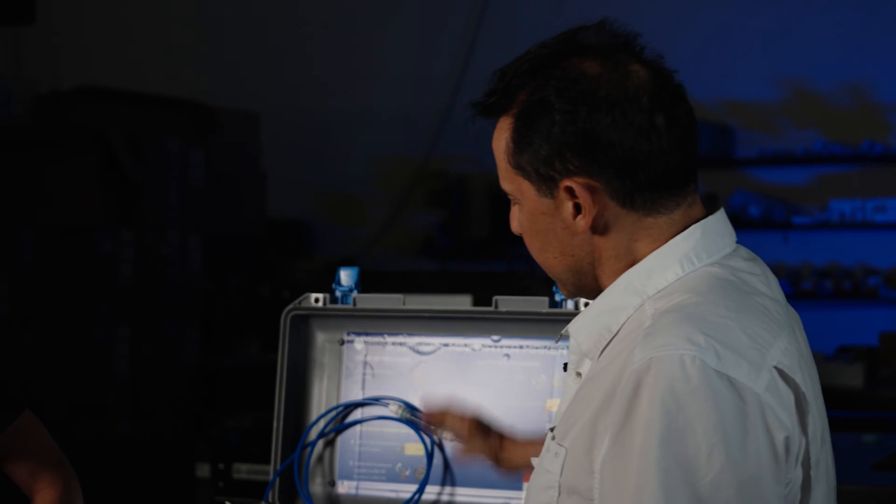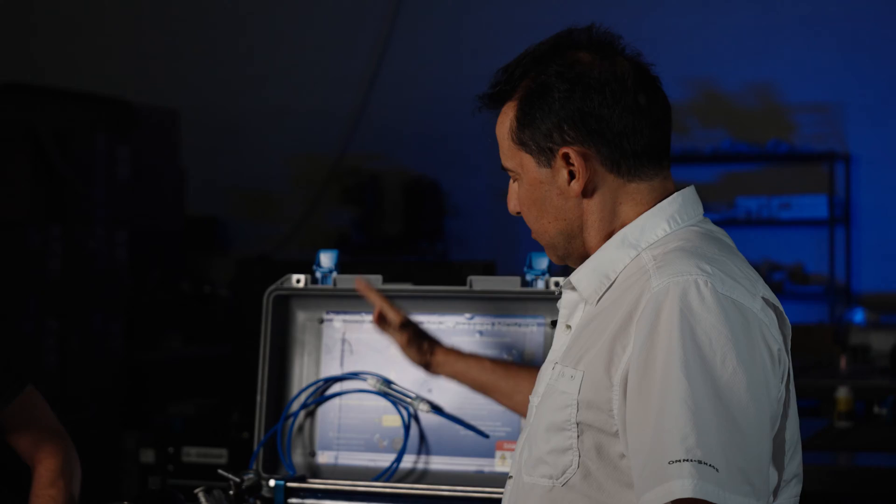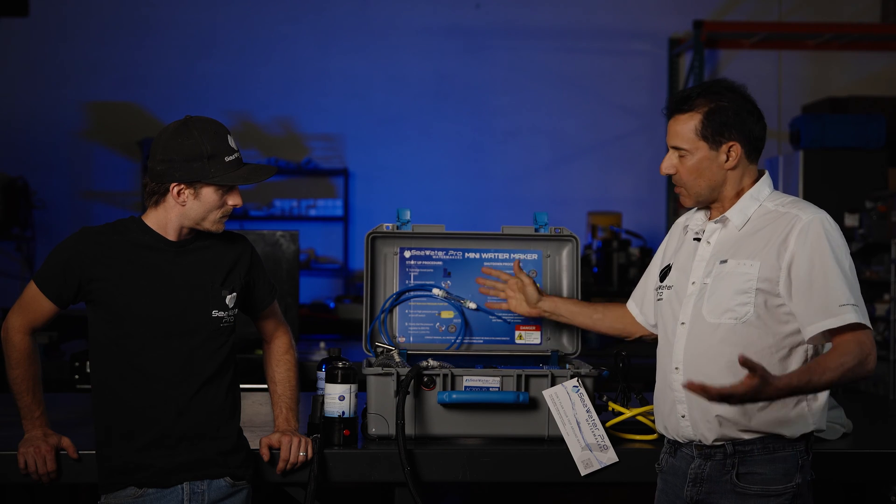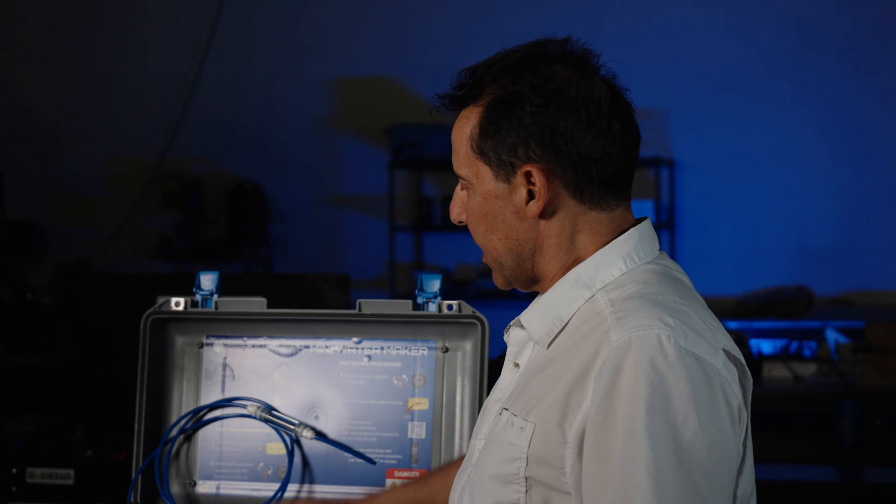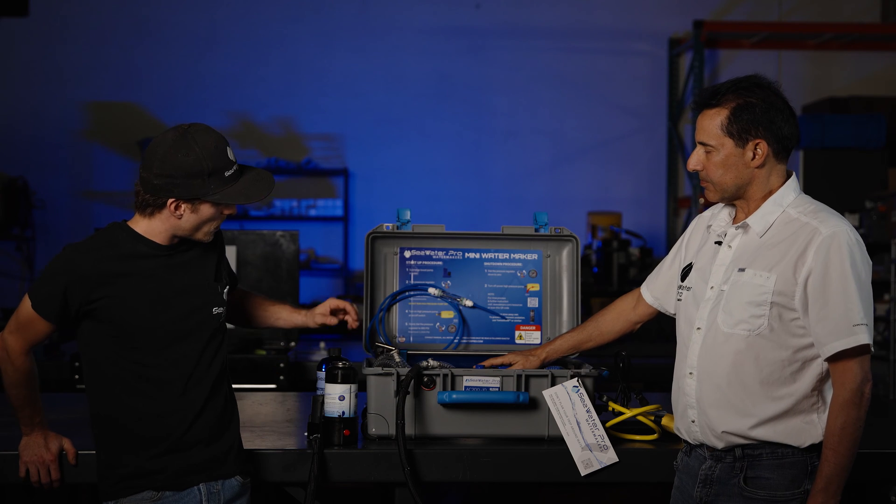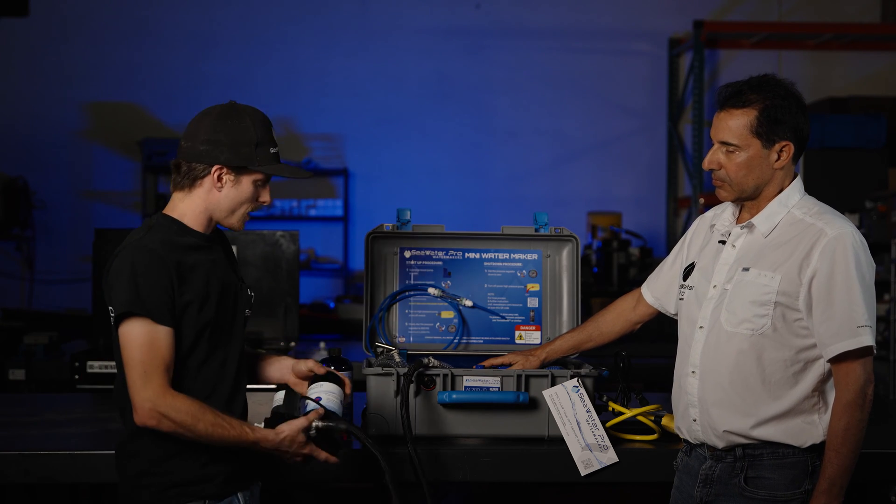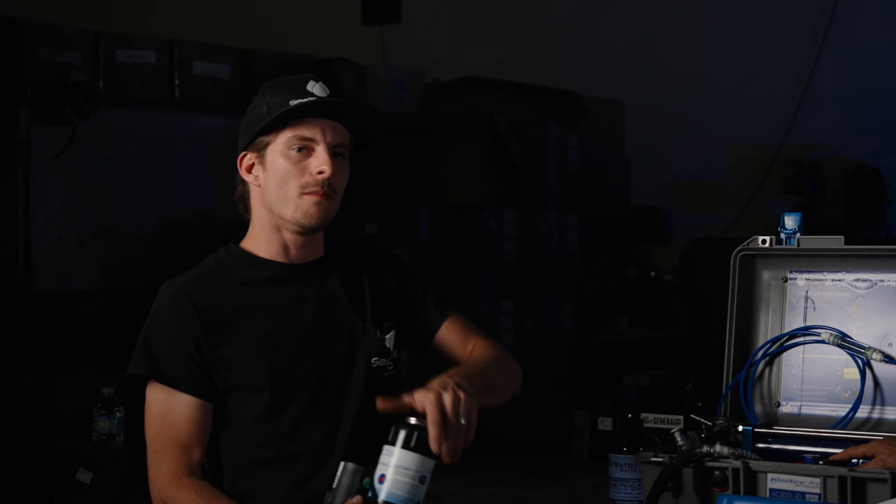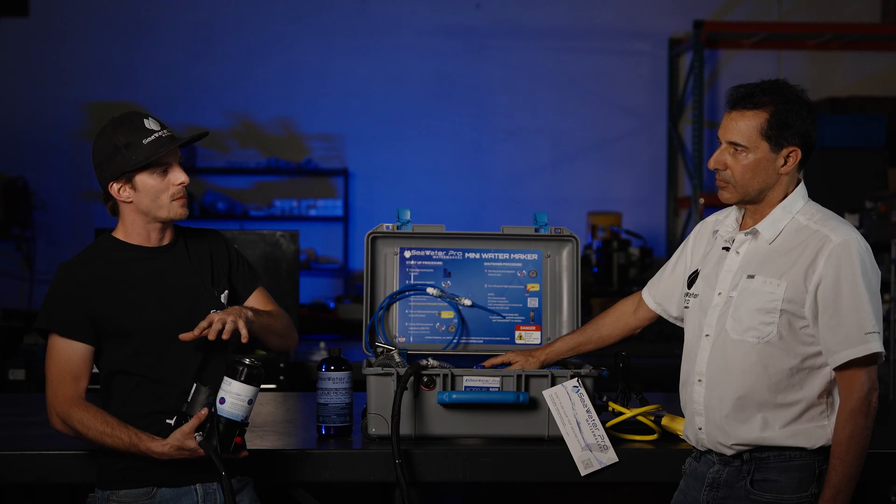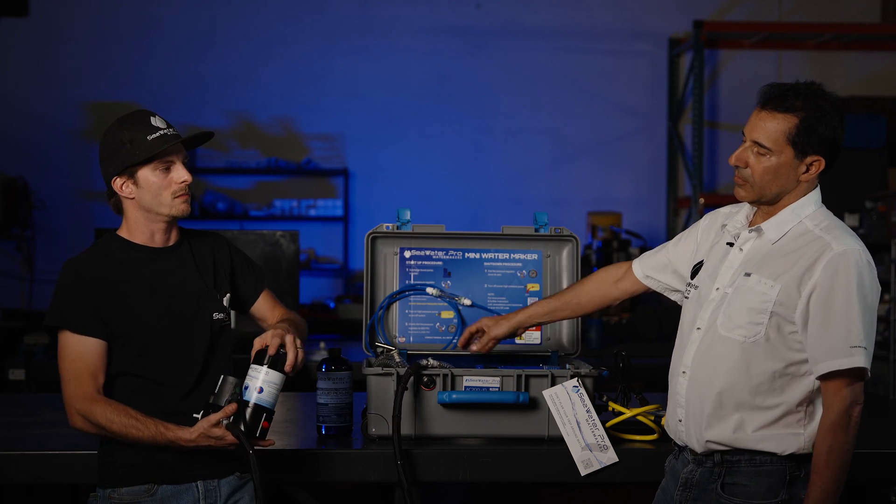We have a system here that will make about 9 to 12 gallons per hour depending on temperature and salinity and it's very easy to maintain and operate. So with this system, how does it compare to the modular system where it has pre-filters and a rinse timer?